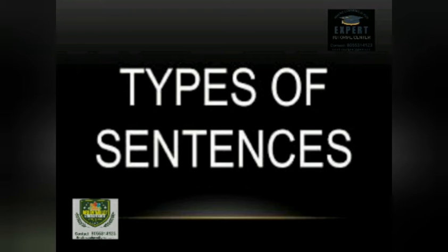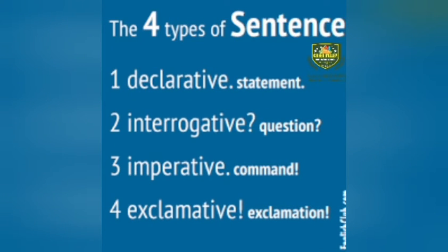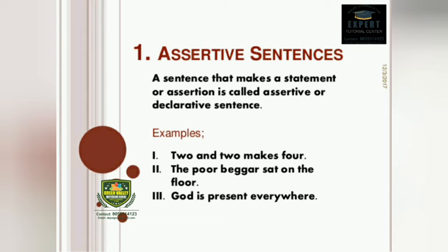Types of sentences. There are four types of sentence. First, declarative, i.e. statement. Second, interrogative, i.e. question. Third, imperative, i.e. command. And fourth, exclamative, i.e. exclamation. Let's see all the topics one by one.